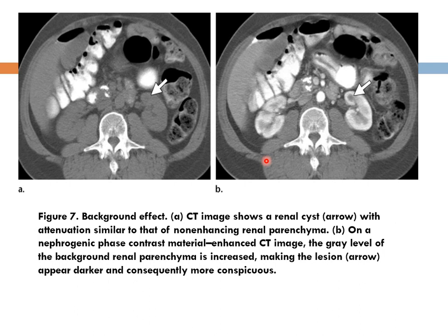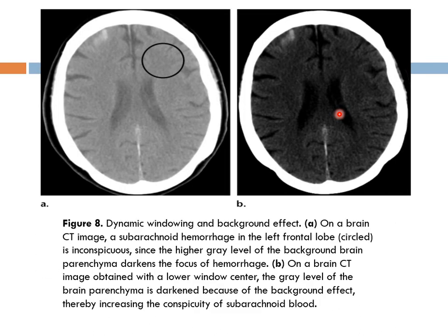For example, in a CT scan of the abdomen, in image A there is a lesion which is isodense to the kidney — not so obvious. In image B, when you give contrast and the background changes, the cyst and the lesion will appear. Again, in a CT scan of the brain, in image A there is a little subarachnoid hemorrhage that is not so obvious. But in image B, when we make the background darker, it will appear more prominently. Change the background and it becomes very prominent.